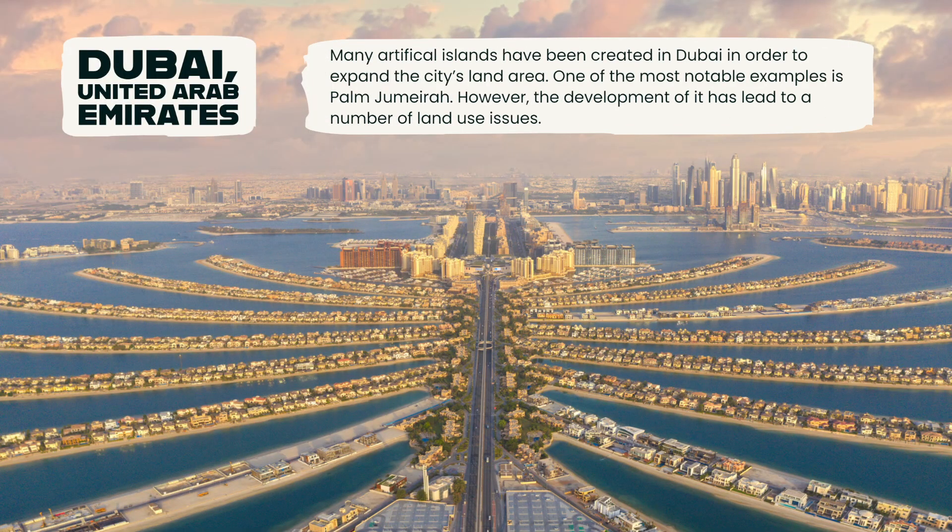An example of a land reclamation issue is the creation of artificial islands in Dubai, United Arab Emirates. Dubai is a city-state located on the coast of the Persian Gulf, and in recent decades the government has embarked on a massive land reclamation project to expand the city's land area. One of the most notable examples is the creation of Palm Jumeirah, an artificial island shaped like a palm tree, which was constructed using land reclamation techniques. The project involved the dredging of sand from the sea floor to create a new land mass. The development of Palm Jumeirah has led to a number of land use issues, such as the destruction of natural habitats and the displacement of marine life.